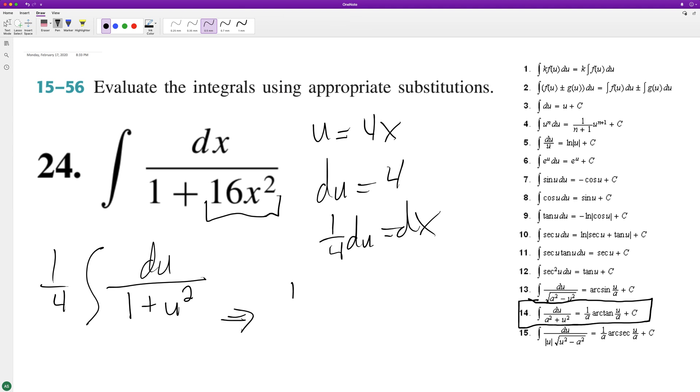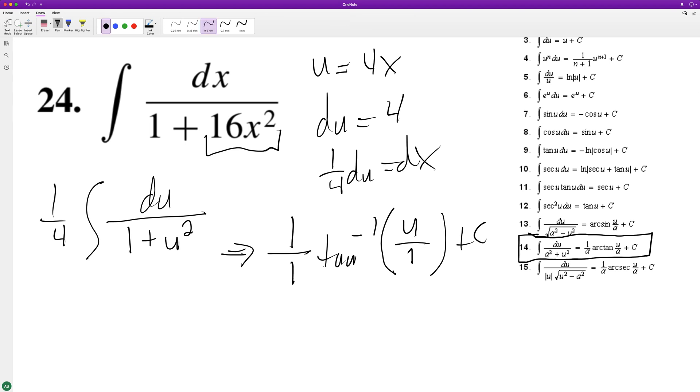So we're going to end up here with 1 over a, which is just 1, and then arctangent of u over a, which is 1, plus C. And then what this is going to become is substituting back in. Oh, I'm sorry, I need the 1/4 out there.